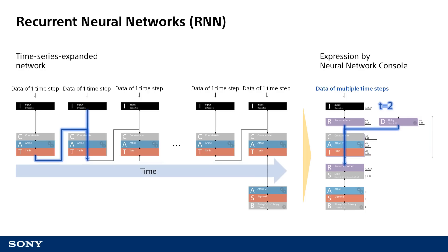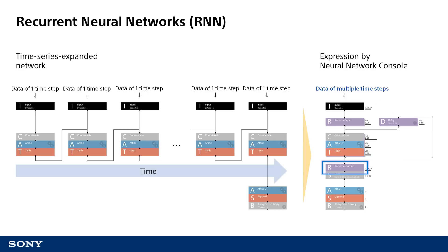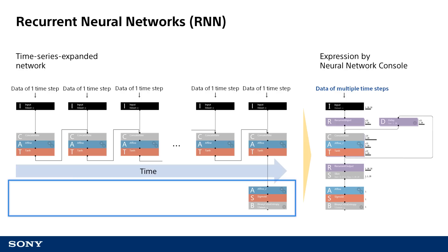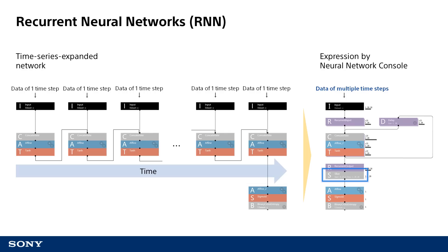At the next time step, concatenate, affine, and tanh will be processed in the same manner for the data at the second time step extracted by recurrent input, and the result is passed on to the next time step through delay as well. When the processing of all time steps is done, the result of the processing at each time step is simultaneously output to recurrent output. Since the network on the left-hand side uses only the output of the last time step, the network on the right-hand side is configured to extract only the output of the last time step using the slice layer.